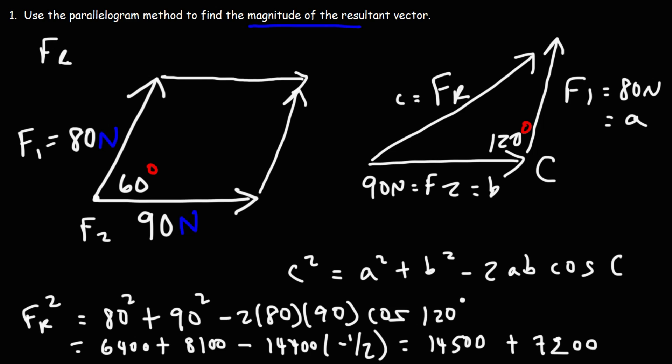So we have 14,500 plus 7,200. So FR squared is 21,700.